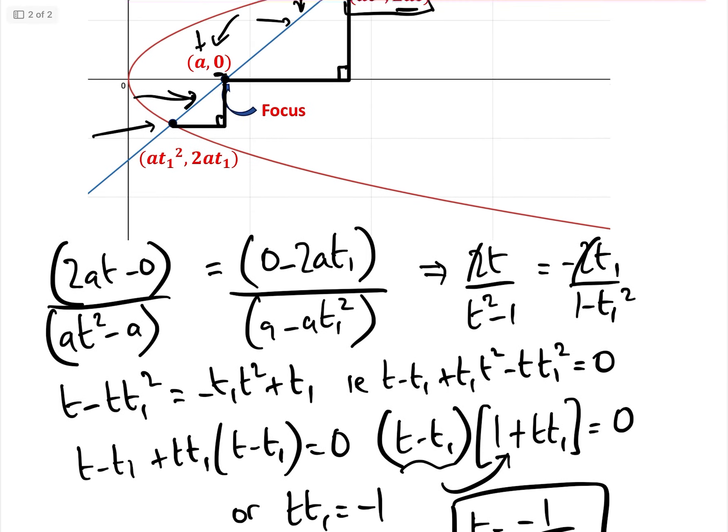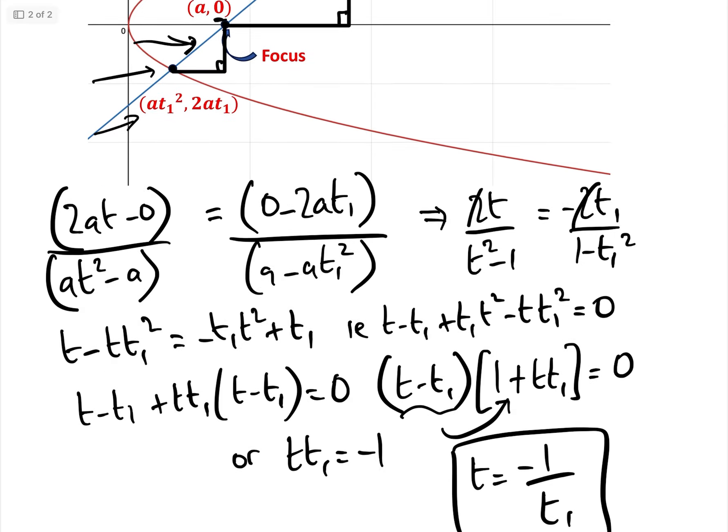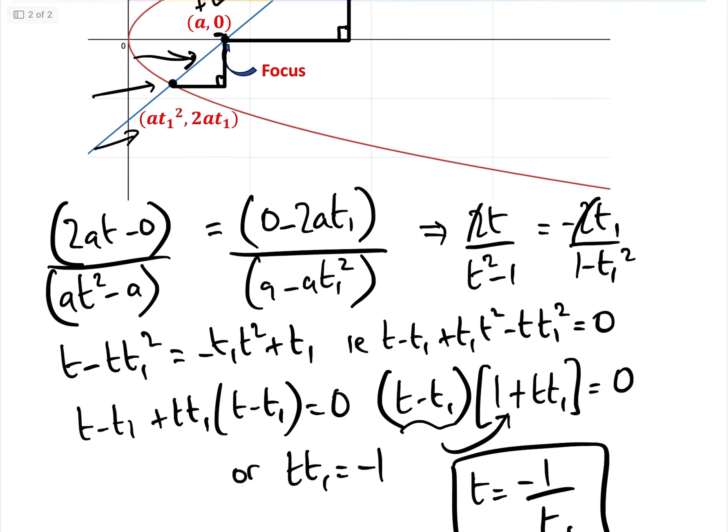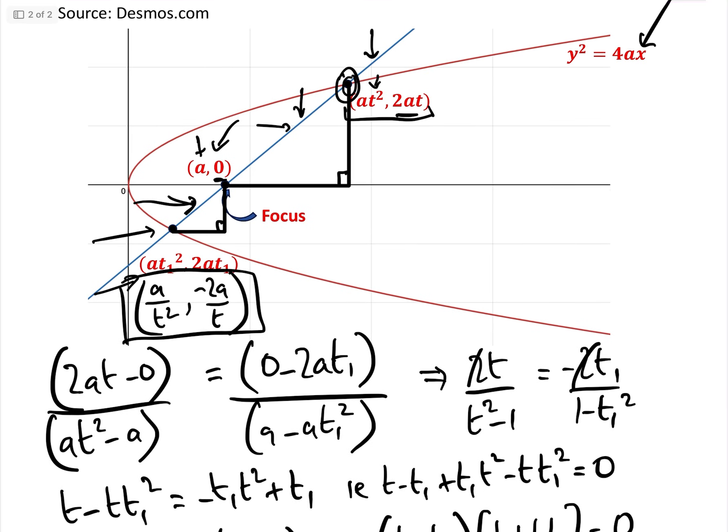which means we can now put in here as our equation. Instead of t1, we can put 1 over t. So this coordinate now will be a over t squared, and this coordinate here will be minus 2a over t. So we can now read off the coordinate of the other side as long as we know what t and a are on this side.